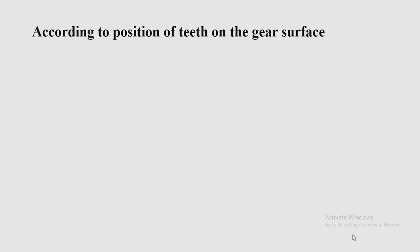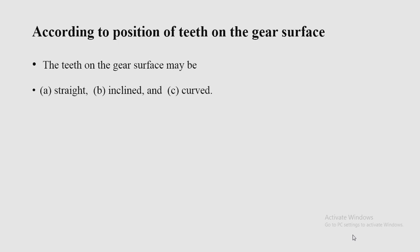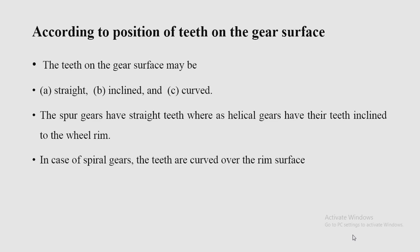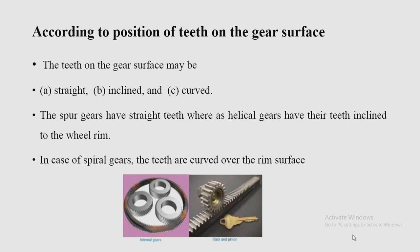Classification according to the position of teeth on the gear surface: teeth may be straight, inclined, or curved. Spur gears have straight teeth, helical gears have their teeth inclined to the wheel rim at a helix angle, and spiral gears have teeth curved over the rim surface.